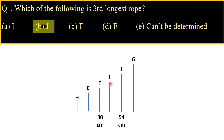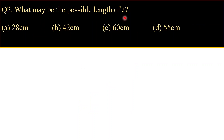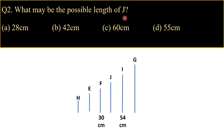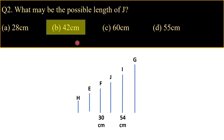Let's move on to the next question: what may be the possible length of J? Looking at the rope arrangement, J lies between F and I. So the length of J will be greater than 30 centimeters and less than 54 centimeters. Checking the options, option B is 42 centimeters — and 42 is greater than 30 and less than 54. Hence, 42 centimeters is our answer.